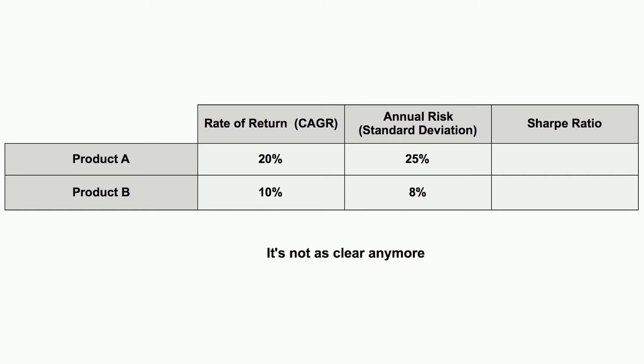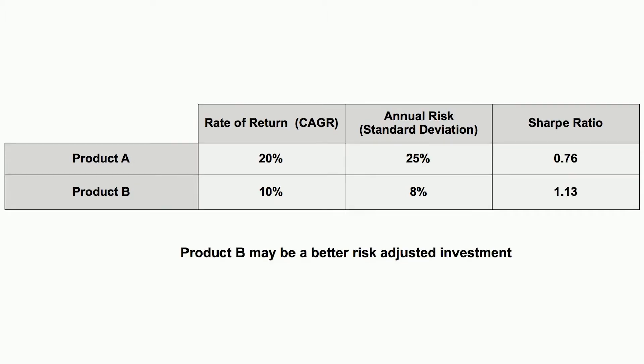Product A did return more, but it's also more inconsistent. When we calculate the Sharpe Ratio, now we have a more comprehensive picture. With the Sharpe Ratio, the higher the number, the better the risk-adjusted return may be. So in this case, even though product B has a lower annual rate of return, it's been more consistent, and in the long run it may be the better risk-adjusted investment. The Sharpe Ratio is good — much better than just looking at a rate of return by itself — but it does have one very important drawback. When calculating the standard deviation part of that equation, it actually treats gains and losses the same. A gain of 10% is no different than a loss of 10%; they're both just deviations from the mean that will affect that ratio.